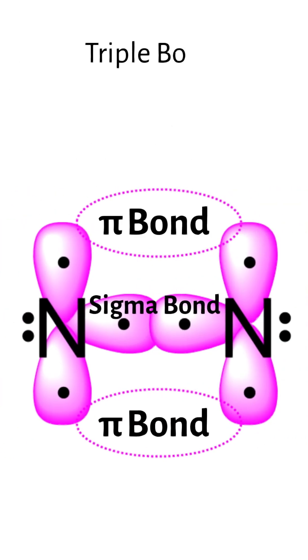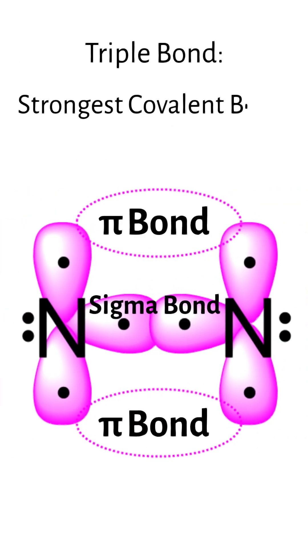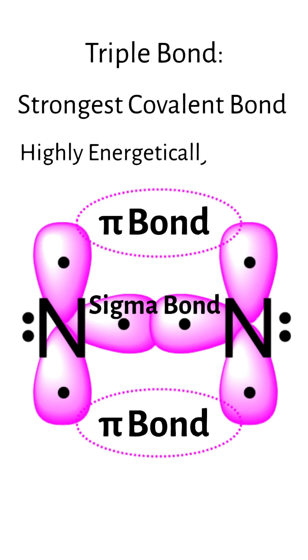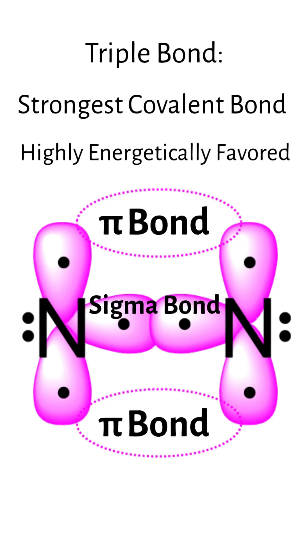This triple bond is the strongest covalent bond, thereby being highly energetically favored, which is why so much of the air we breathe is nitrogen. It's hard to break down.